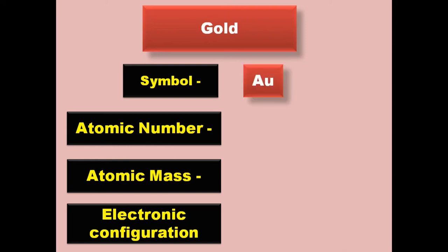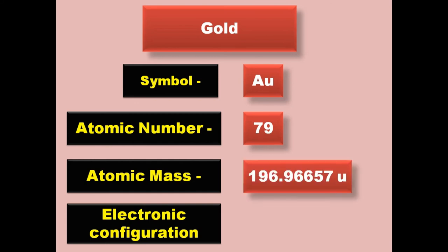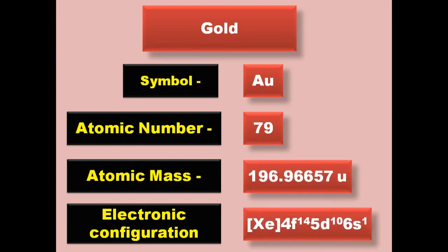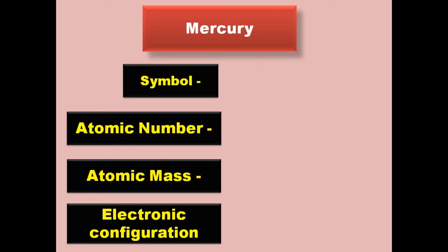Gold has symbol Au, atomic number 79, atomic mass 196.9667, electronic configuration [Xe] 4f14 5d10 6s1. Gold is a transition metal and exists in solid form at room temperature.